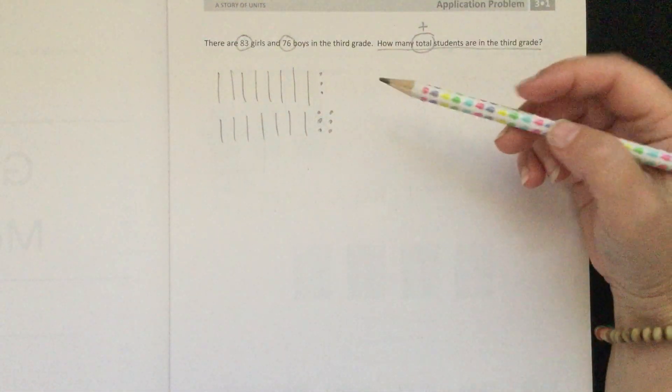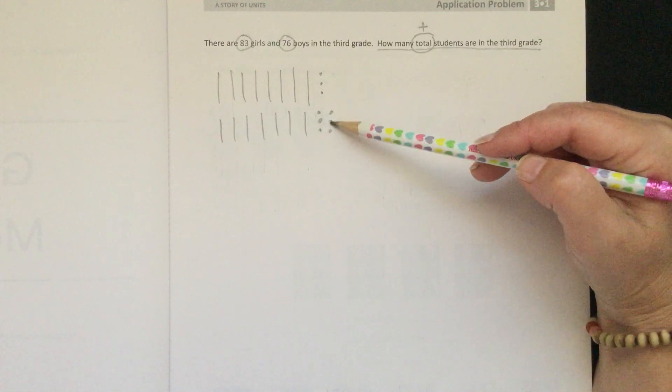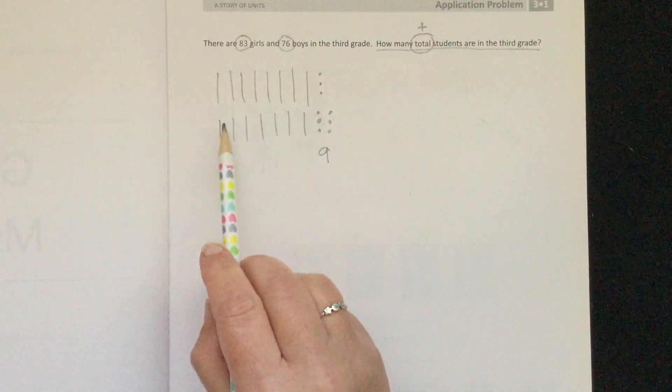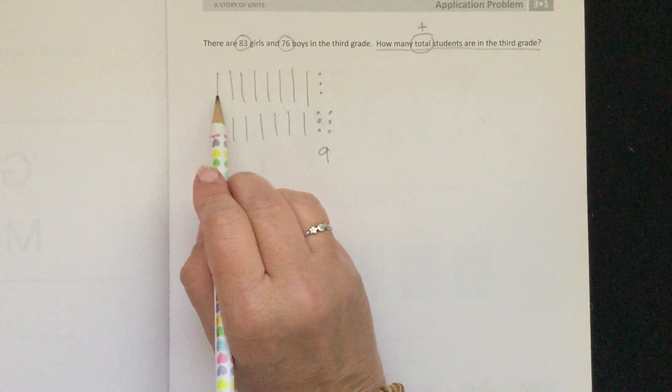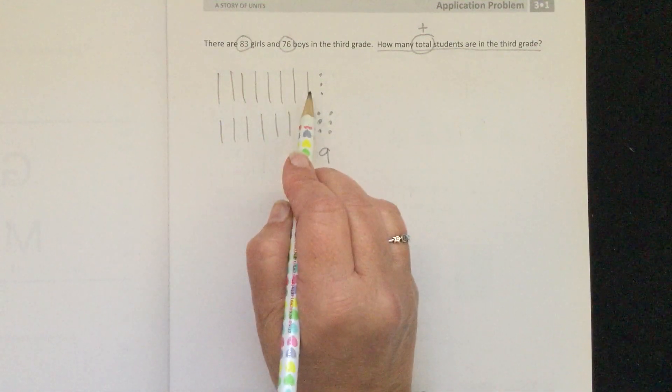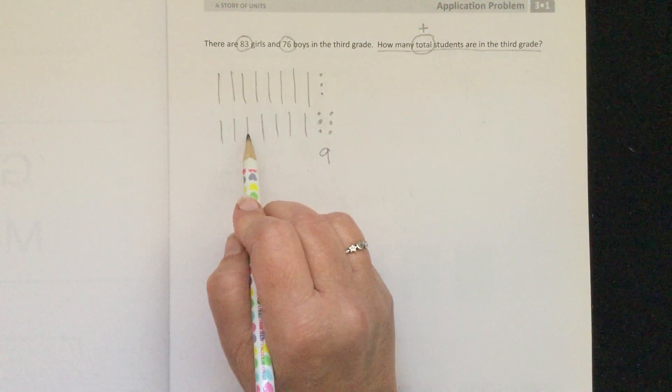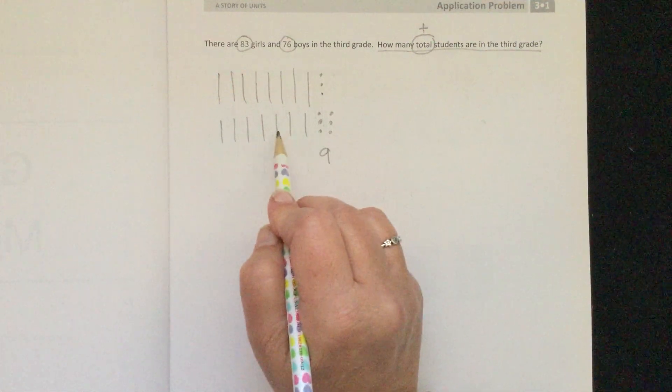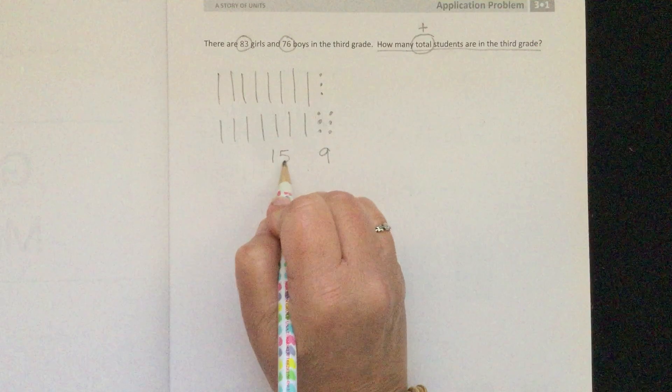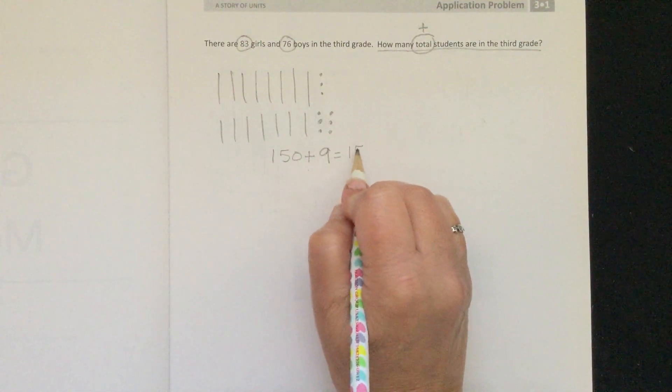If we could make a 10, we would, but we have 3 plus 6 only equals 9. So we'll put our 9 here. Then we'll count out our tens: 10, 20, 30, 40, 50, 60, 70, 80, 90, 100, 110, 120, 130, 140, 150. So we'll write 150 plus 9 equals 159.